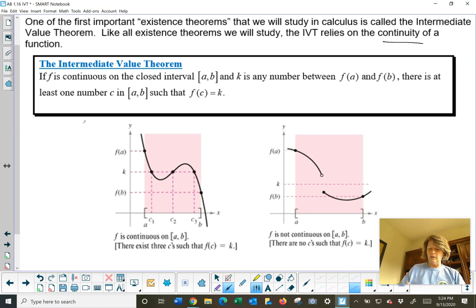So this gets a little confusing, and sometimes people have a difficult time. First off, we must have continuity. Second thing, we must have some betweenness going on. Then we can come in with the conclusion. The conclusion tells us that there is a k such that, or a c, such that f(c) will yield that value k.